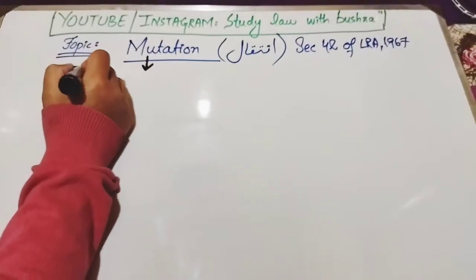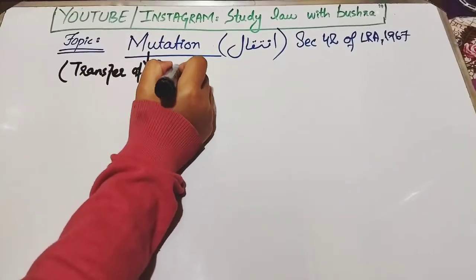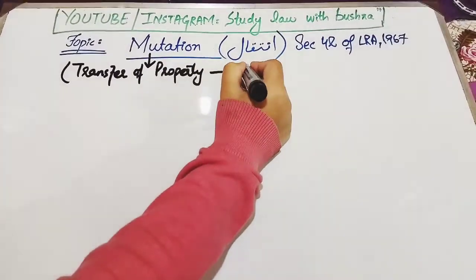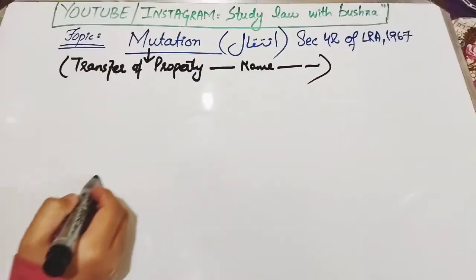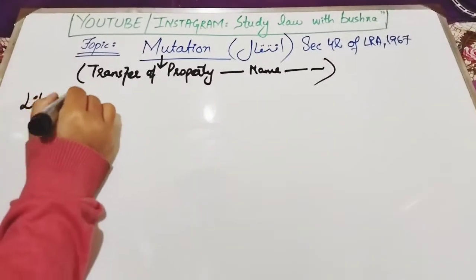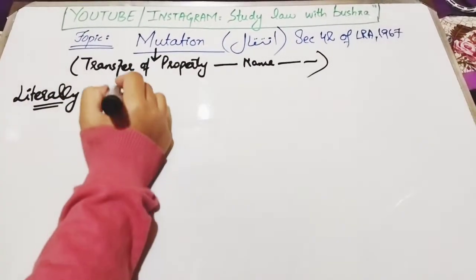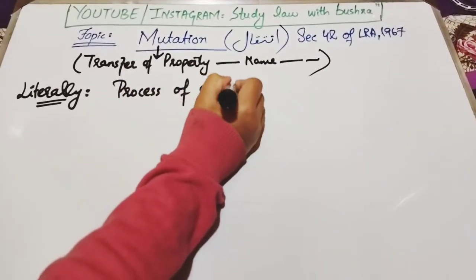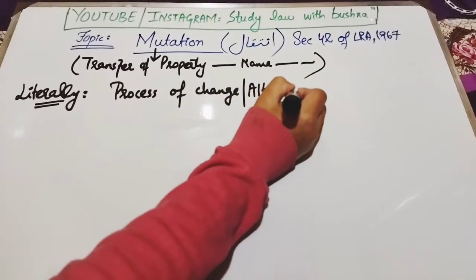If we look into the meaning of mutation, mutation simply means transfer of property from one person to another person's name. Ek bande se jo doosre bande ko property transfer hoti hai usko hum kehte hain mutation. Literally, mutation means process of change or alteration — tabadili ka jo amal hai, alteration ya amendment ka process hai.